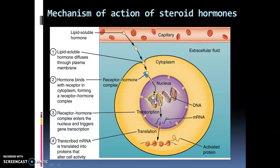The hormone-receptor complex binds with the DNA and causes the transcription of mRNA from DNA. A new mRNA is synthesized from the DNA template and then transported from the nucleus to the cytoplasm. In the cytoplasm, the mRNA undergoes the translation process. You may have learned about transcription and translation processes in your previous classes.